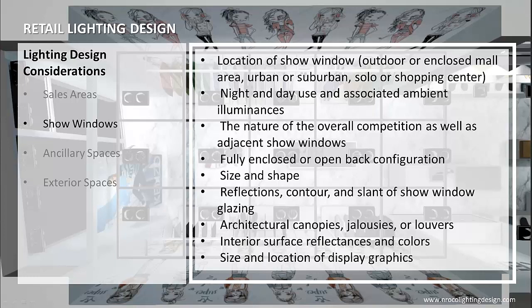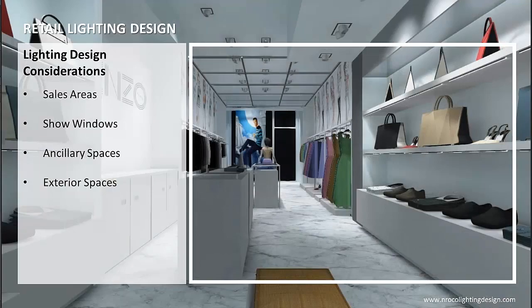Dimming and/or multi-step on and off controls for the electric lighting should be installed to compensate for the highly variable nature of daylight and to provide much lower illuminance levels for nighttime conditions. Factors to consider in show window lighting design include: location of show window (outdoor or enclosed mall area, urban or suburban, solo or shopping center), night and day use and associated ambient illuminances, the nature of competition and adjacent show windows, fully enclosed or opened back configuration, size and shape, reflections, contour and slant of show window glazing, architectural canopies, jalousies or louvers, interior surface reflectances and colors, and size and location of display graphics.